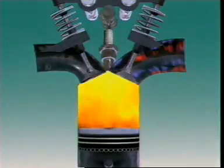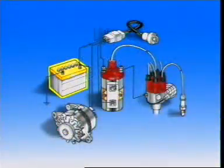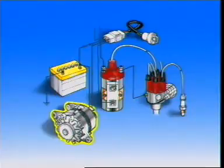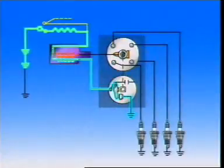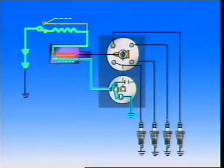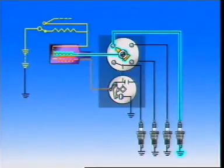To ignite the charges, the energy comes from the battery and alternator, and the voltage is increased by the ignition coil. The system has two circuits: the primary or low-tension circuit initiates the spark; the secondary or high-tension circuit produces the high voltage and distributes it to the spark plugs.